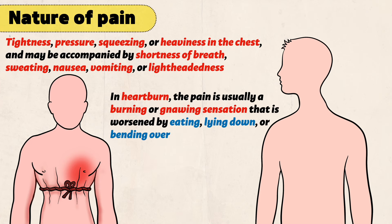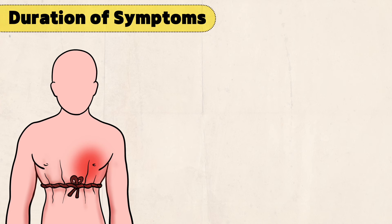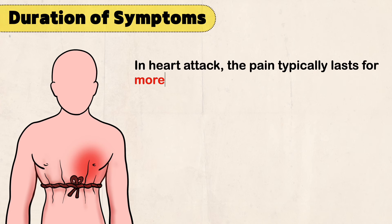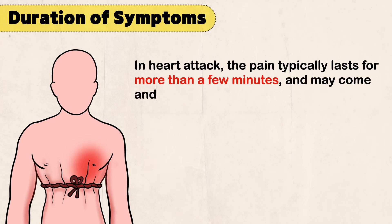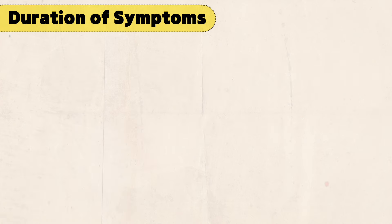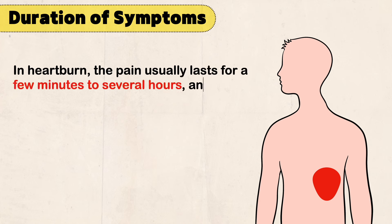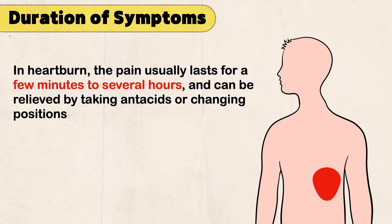Duration of symptoms is also very important. In a heart attack, the pain typically lasts for more than a few minutes and may come and go or persist continuously. It may not go away with rest or antacid medications. In heartburn, the pain usually lasts for a few minutes to several hours and can be relieved by taking antacids or changing positions.